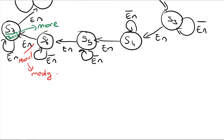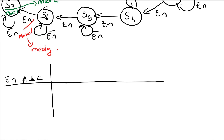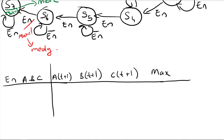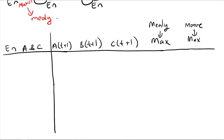In this case I have eight states, so I need three bits — let's call them a, b, and c — and I have an enable input. The columns are: a(t+1), b(t+1), c(t+1), and the output max. Let's have one max column for the Mealy output and another max column for the Moore output.